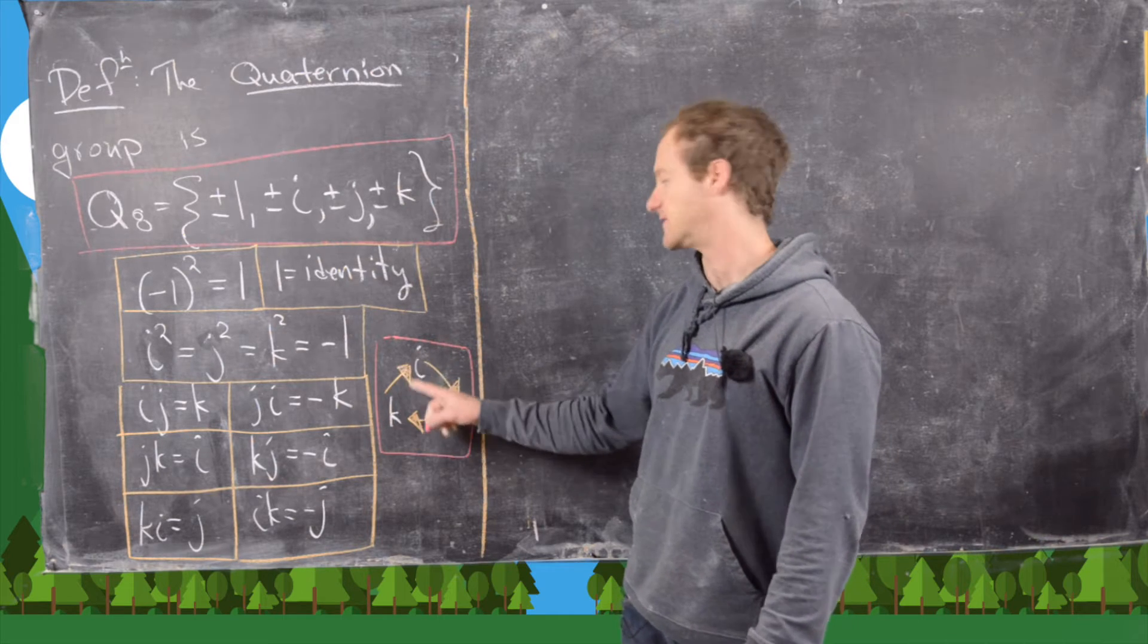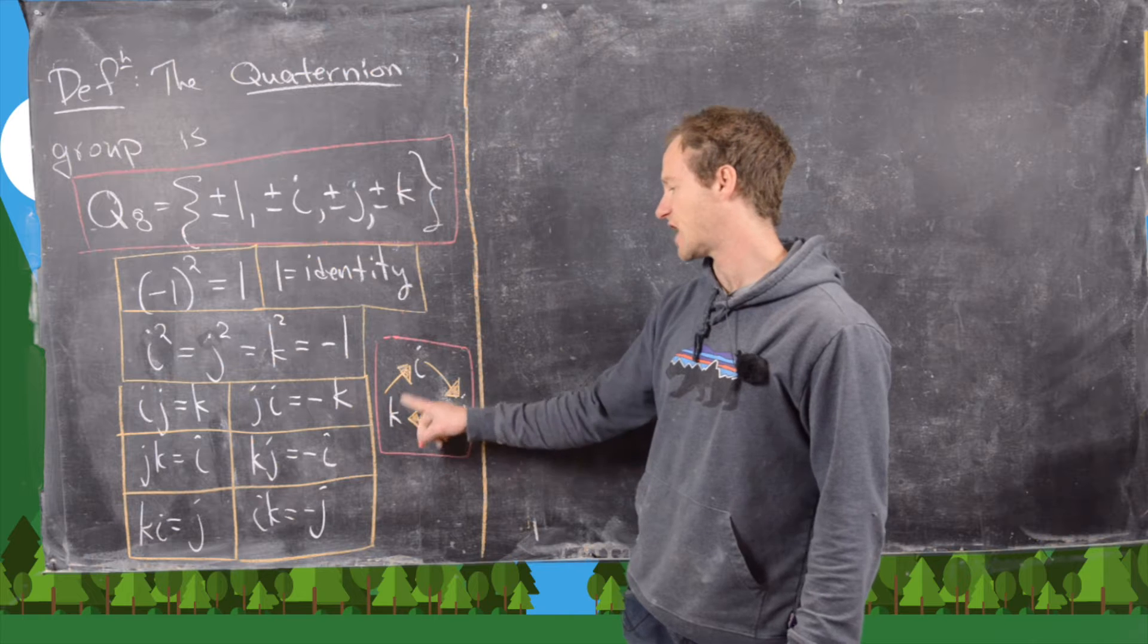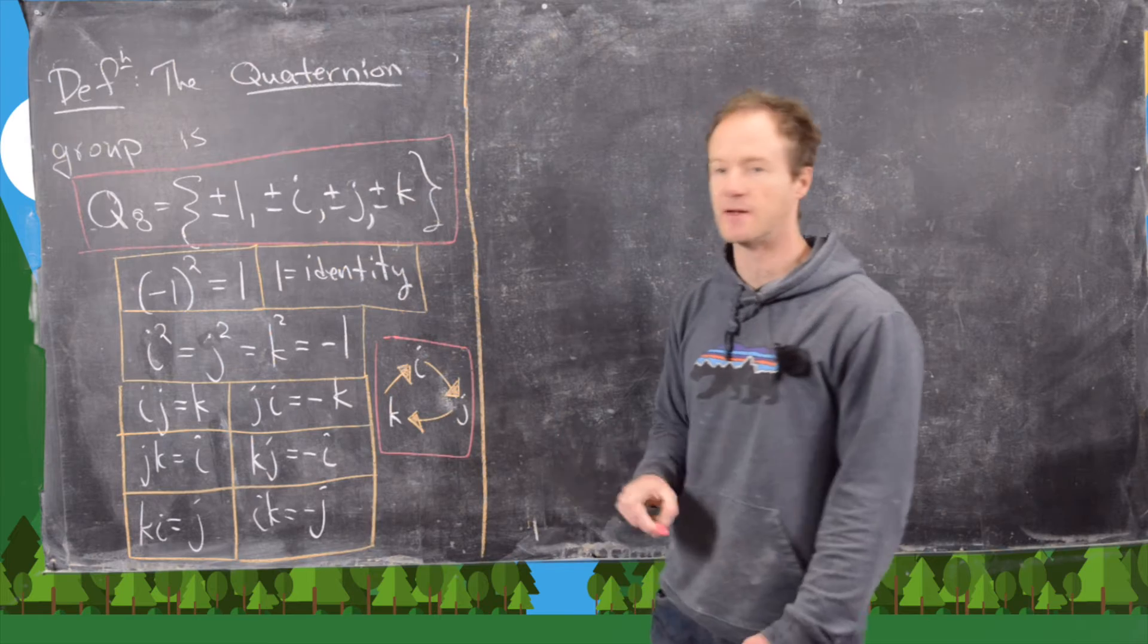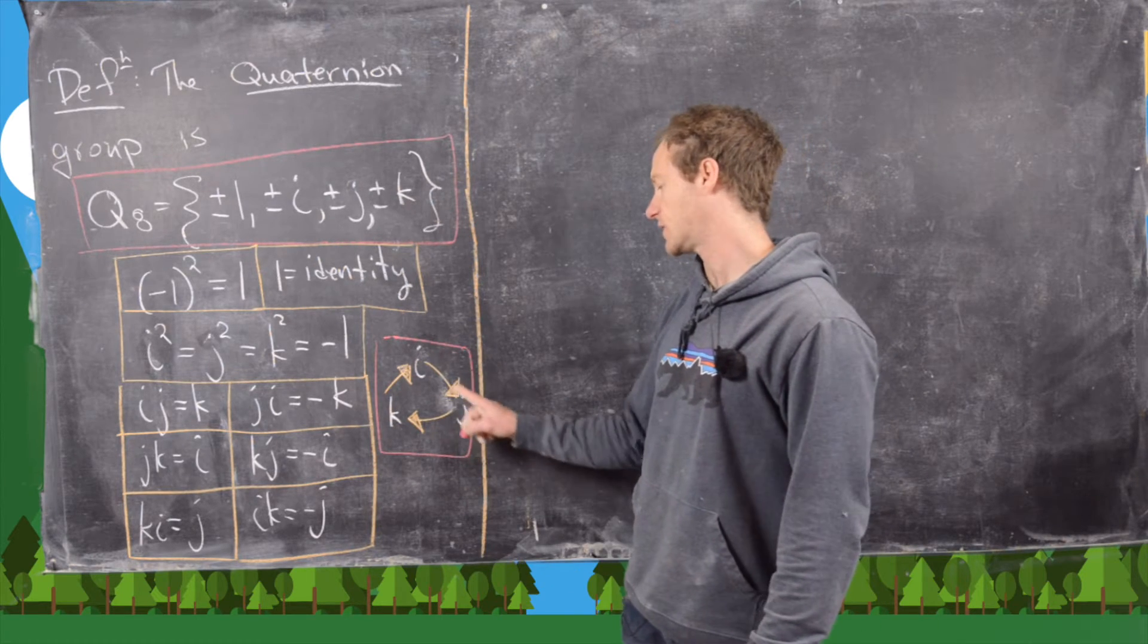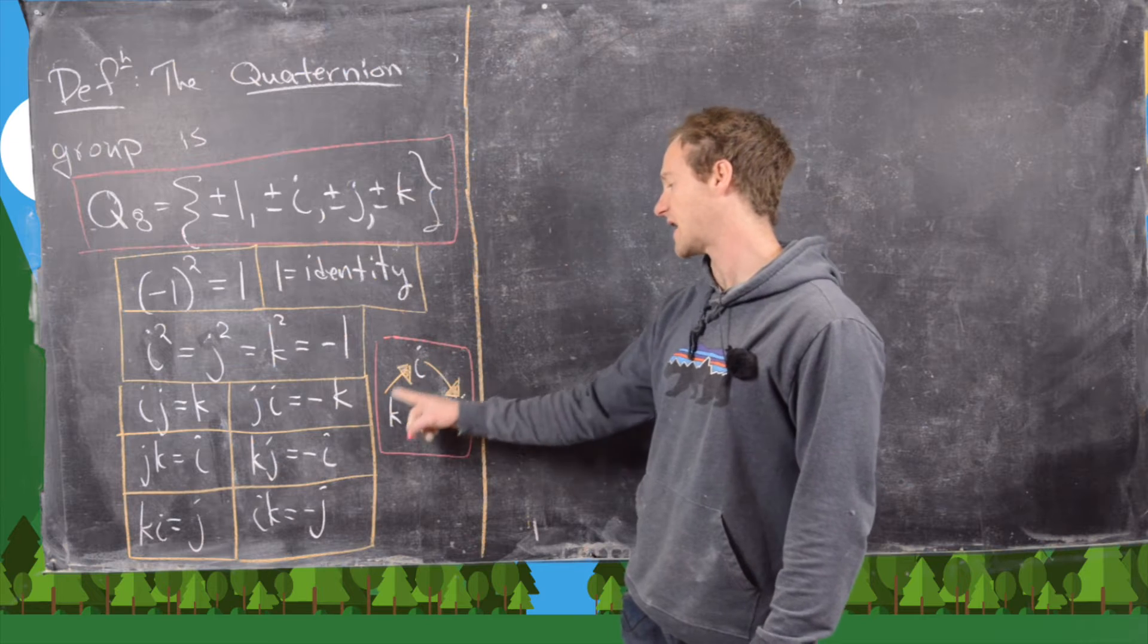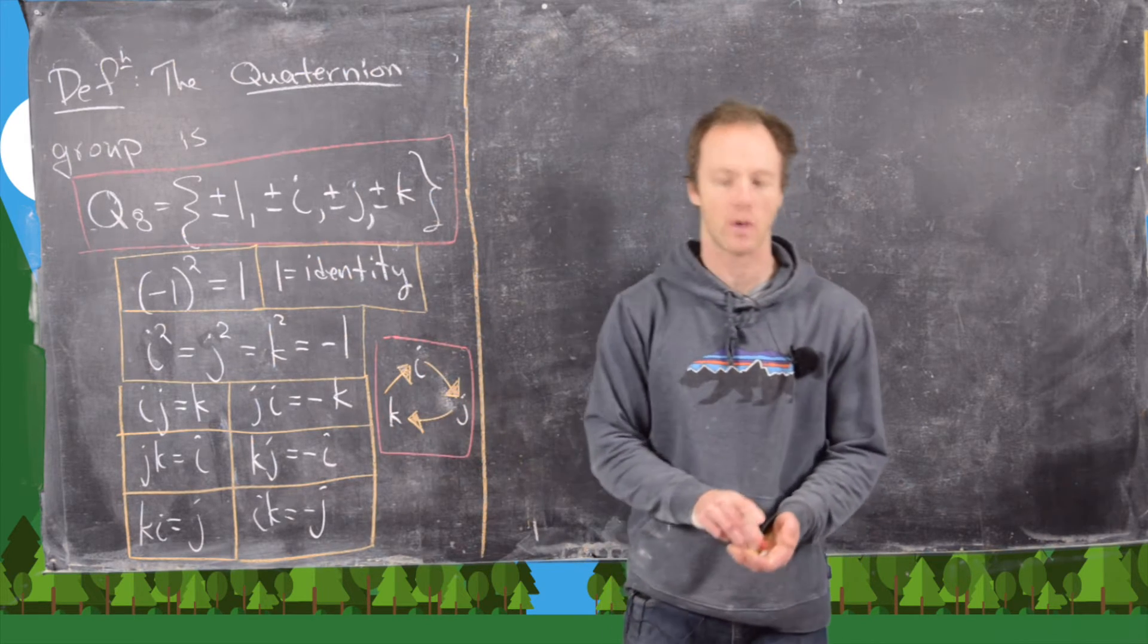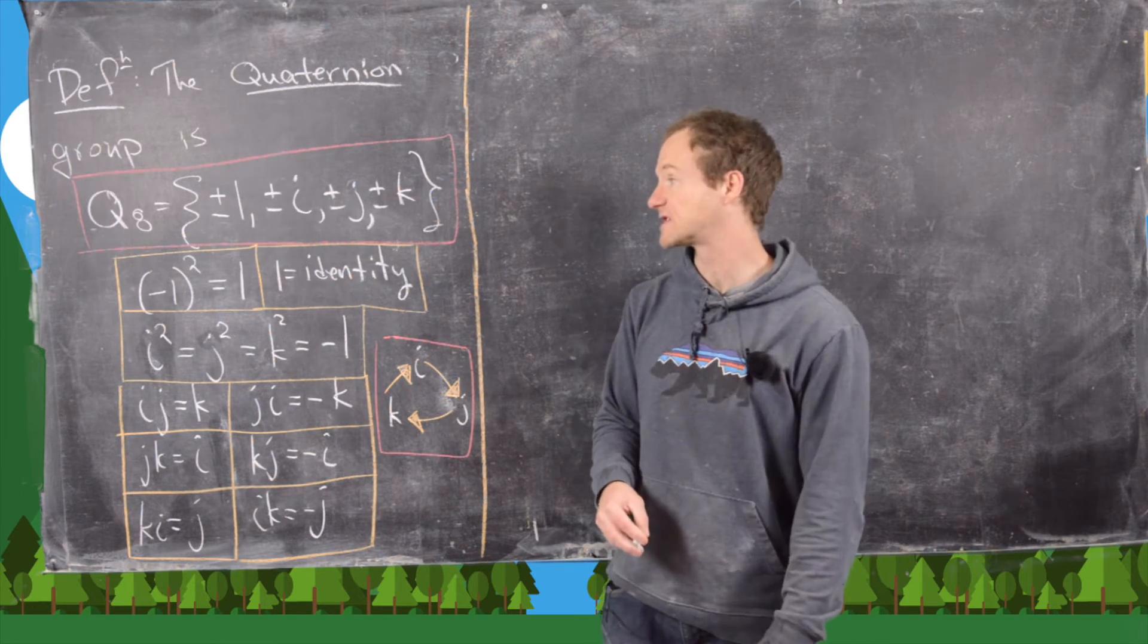you'll always have a positive sign. So i times j is k, j times i is i. Sorry, j times k is i, k times i is j. But if you go against the arrows, you pick up a minus sign. So j times i is minus k, k times j is minus i, and so on and so forth. So what I want to look at here is all of the subgroups of